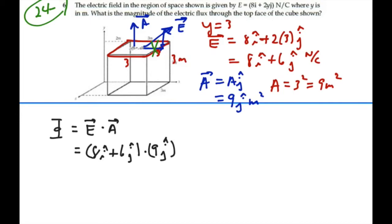i dot with j is going to be 0, so we can see that the i component of the E field didn't matter. j dot with j will give us 1, 6 times 9 is 54, so this is going to equal 54 newton meters squared per coulomb. That is the net flux due to this field through the upper surface of this cube.